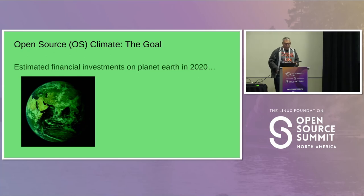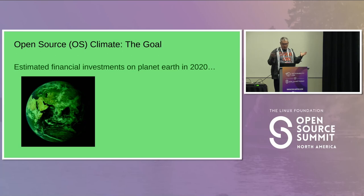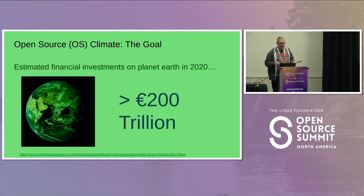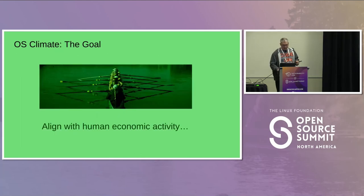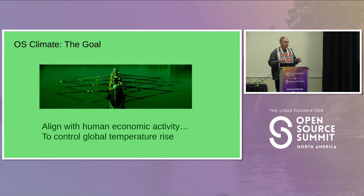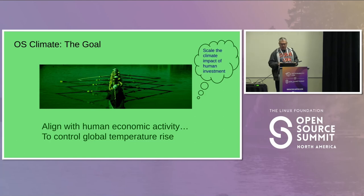What is the actual goal of the OS Climate project? As of 2020, estimated total financial investments on all of planet Earth were in excess of 200 trillion euros. The goal is to align all of that human economic activity and investment to try and control global temperature rise. In a sense, what we're really trying to do is scale the climate impact of human investment.